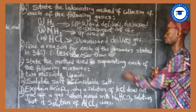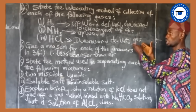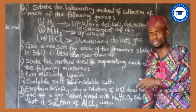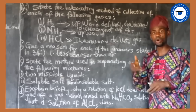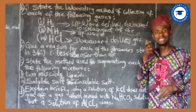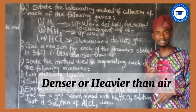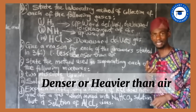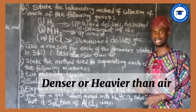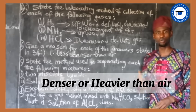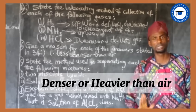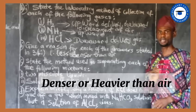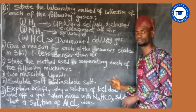For hydrogen chloride gas, it is the only one different from the two. It is collected by downward delivery of gas, and the reason is that HCl gas is denser — heavier — than air. That is why hydrogen chloride gas is collected by downward delivery of gas and upward displacement of air.